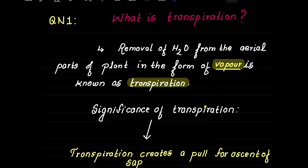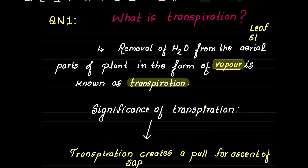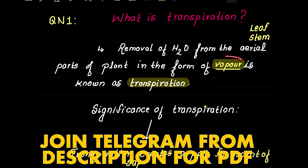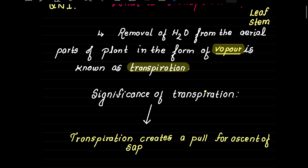Transpiration is very important. What is transpiration? Transpiration is the removal of water in the form of vapor from the aerial parts of the plant. The aerial parts include leaf and stem. Water is removed from the leaf and stem in the form of vapor — this is called transpiration.